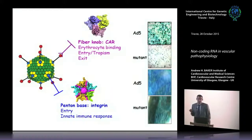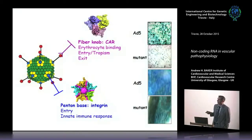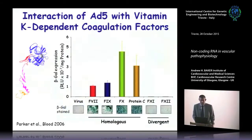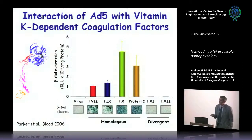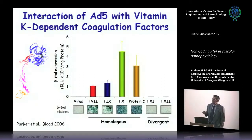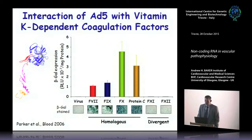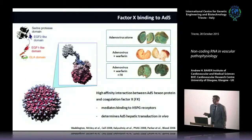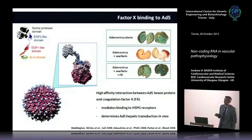Neither of those pathways was relevant in vivo, so there was clearly another mechanism. Many years ago we identified that the virus interacts with coagulation factors circulating at high concentrations in blood. These vitamin K-dependent coagulation factors share a common structure: a GLA domain, EGF1, EGF2, and a serine protease domain. At physiological concentrations in cell culture, they have a big impact on adenovirus transduction.